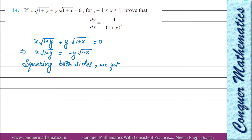Jab hum square karenge, toh x ka square x² ho gaya, √(1+y) ka square (1+y) ho gaya. Aisi hi right mein, minus ka square positive, y ka square y², √(1+x) ka square (1+x). Ab hum brackets ko open karte hain: left side mein x² + x²y, aur right side mein y² + y²x.